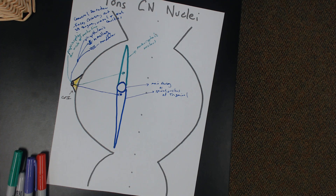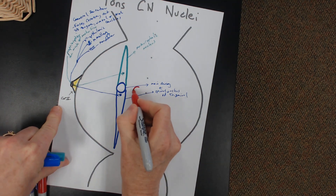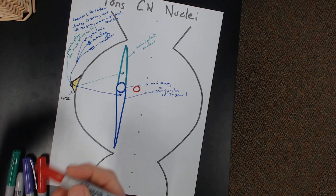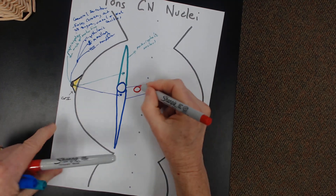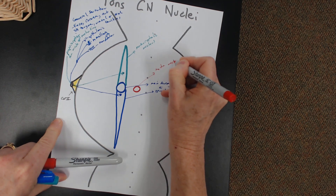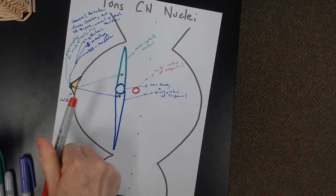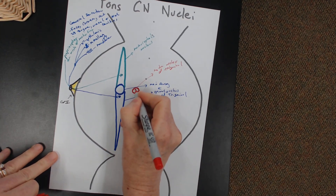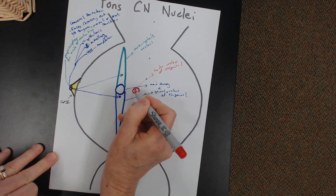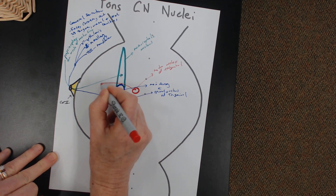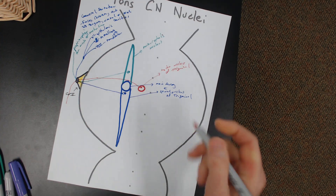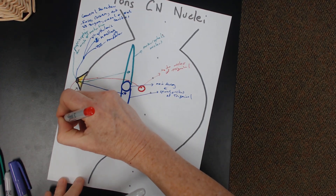Give me another function for cranial nerve number five. Has a motor function — muscles of mastication. So motor function for muscles of mastication happens through which nucleus? Here's my motor nucleus of trigeminal. The motor nucleus of trigeminal — here's a neuronal cell body — it's going to send out axons that travel through cranial nerve number five and those axons are going to innervate muscles of mastication.